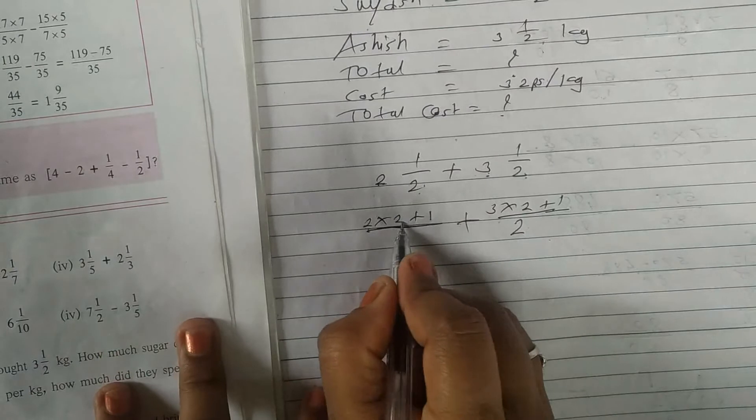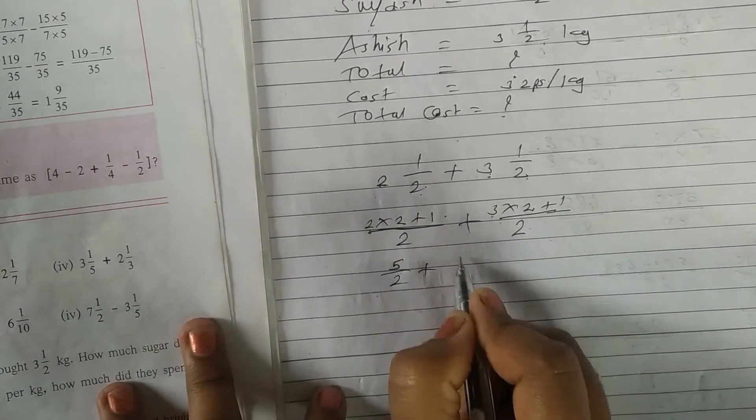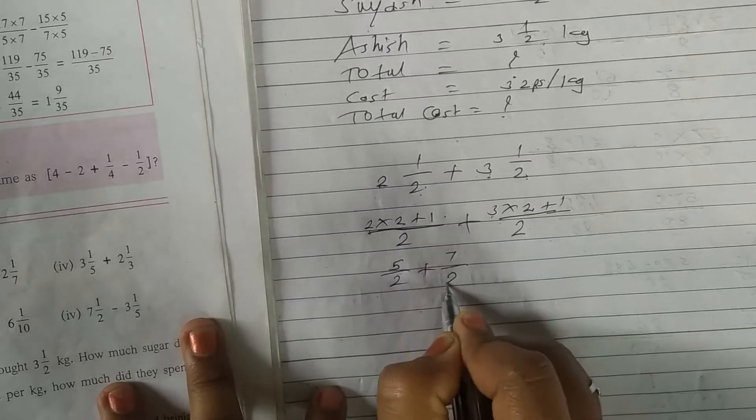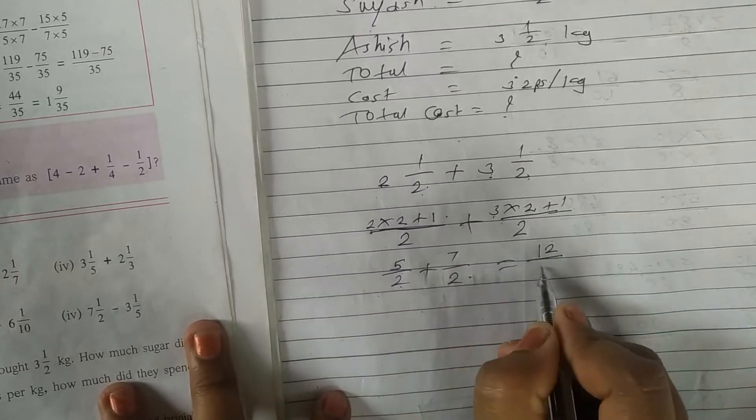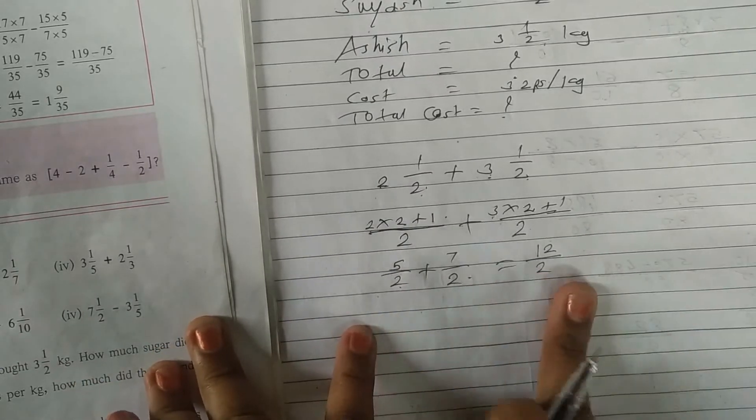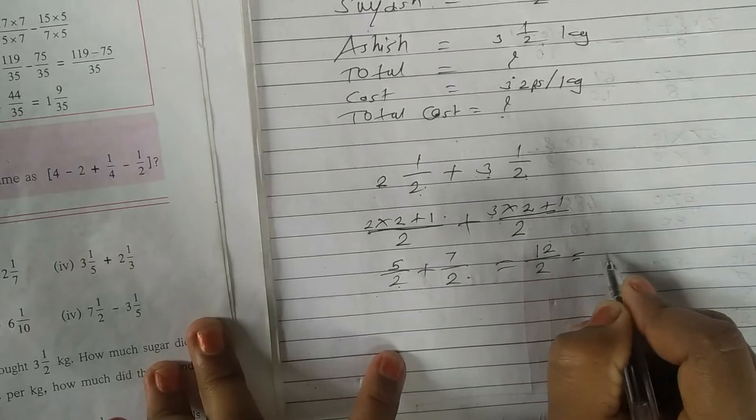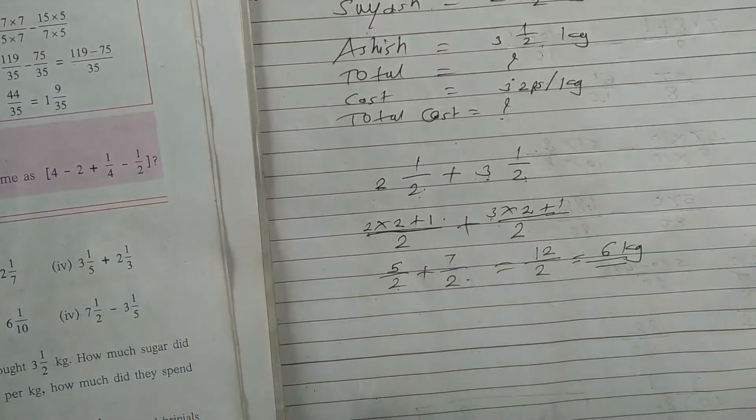So two twos are four plus one, five upon two. Three twos are six plus one, seven upon two. Seven plus five, twelve. Two base, same base one time only. And twelve divided by two is six kg. So this much sugar all together they purchase.